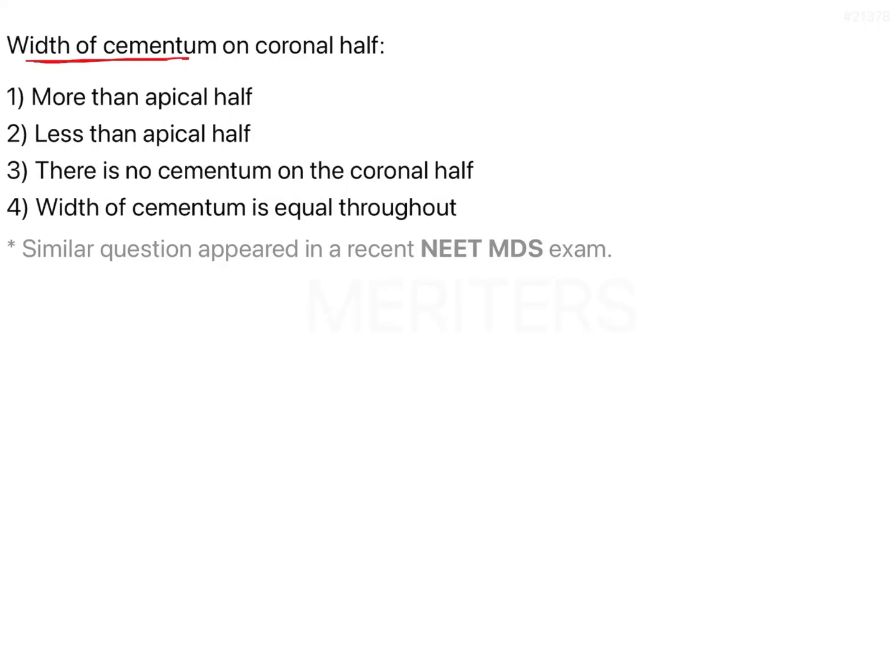The question asks: the width of cementum on the coronal half is more than the apical half, less than the apical half, there is no cementum on the coronal half, or the width of cementum is equal throughout.